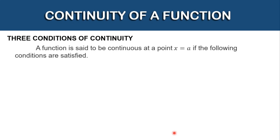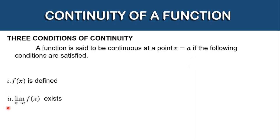Let's discuss the three conditions of continuity. A function is said to be continuous at a point x is equal to a if the following conditions are satisfied. First, the function f of x is defined. Second, the limit of the function f of x as x approaches a exists. Third, the limit of f of x as x approaches a is equal to f of a.